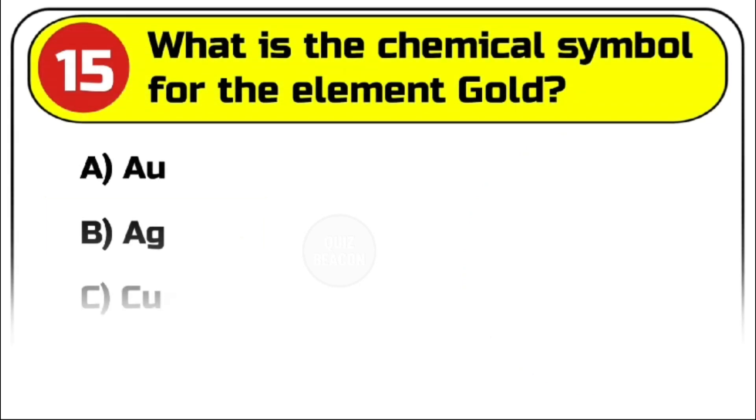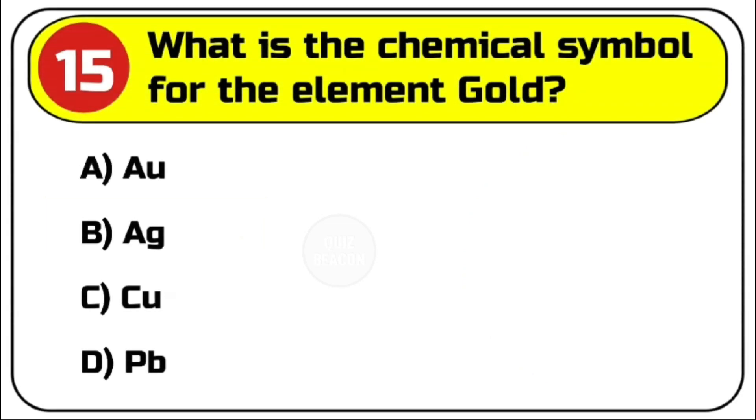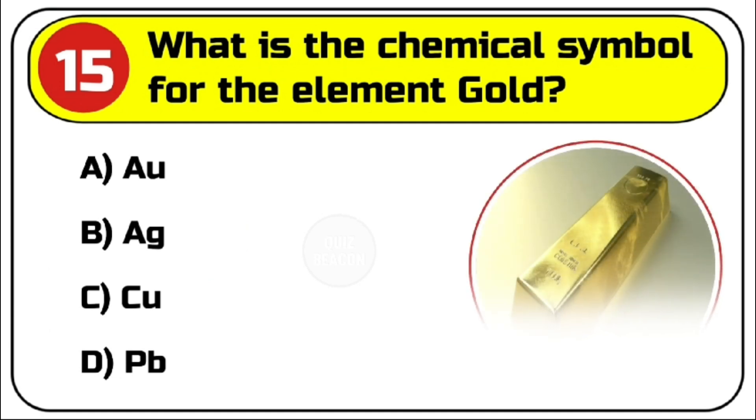Question number 15. What is the chemical symbol for the element gold? Options are A. AU. B. AG. C. CU. D. PB.